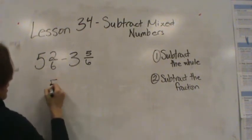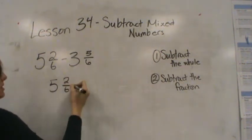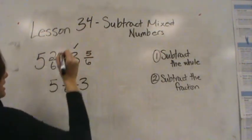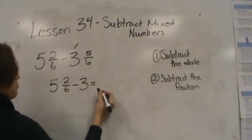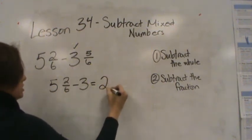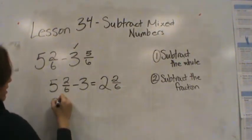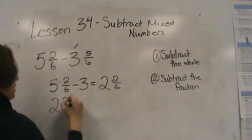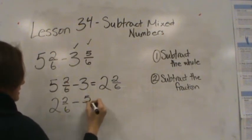I have 5 and 2/6. The first thing I'm going to do is subtract the whole, so I'm going to take away 3. 5 and 2/6 minus 3 is 2 and 2/6. Now I'm going to subtract the fraction: 2 and 2/6 minus 5/6.